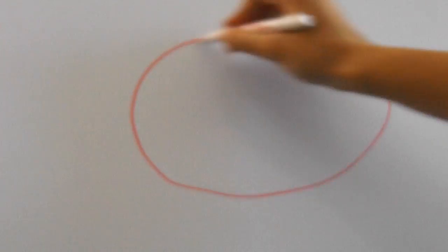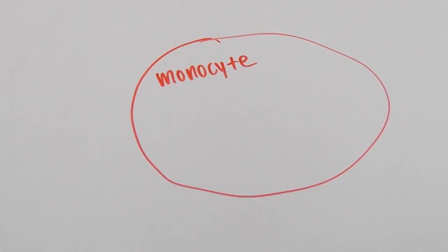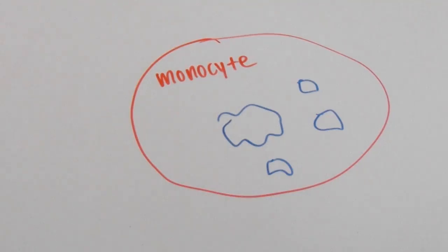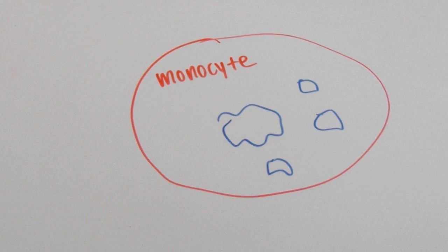Another type of cell is a monocyte, which is a white blood cell that can digest germs, remove dead cells, and display parts of the germs called antigens on its surface. There are a lot of other different types of cells, but you definitely do not need to know all of them for the AP exam.